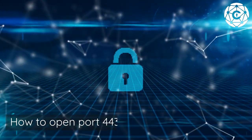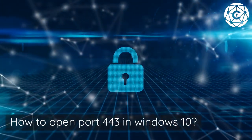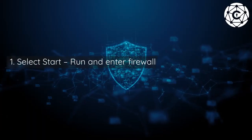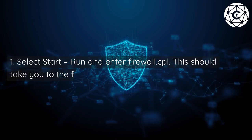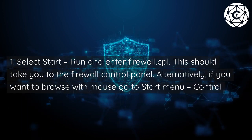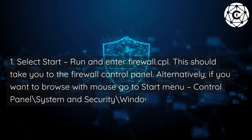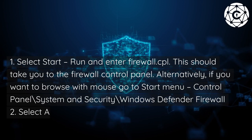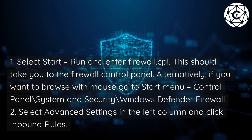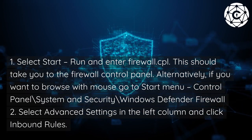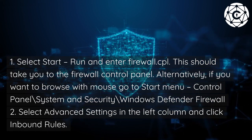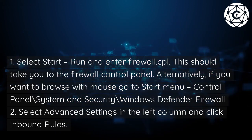How to open port 443 in Windows 10? Step 1: Select Start, Run, and enter Firewall.cpl. This should take you to the firewall control panel. Alternatively, if you want to browse with the mouse, go to Start Menu, Control Panel, System and Security, then Windows Defender Firewall.